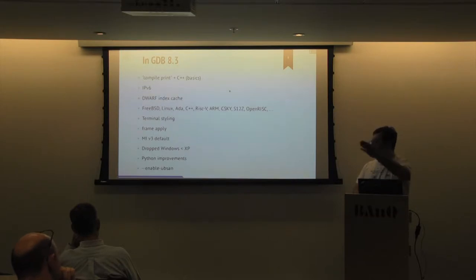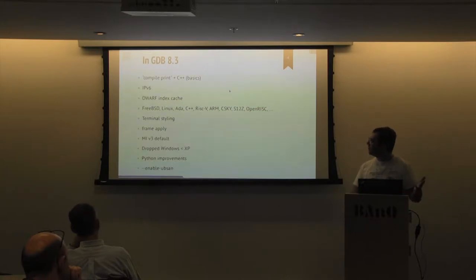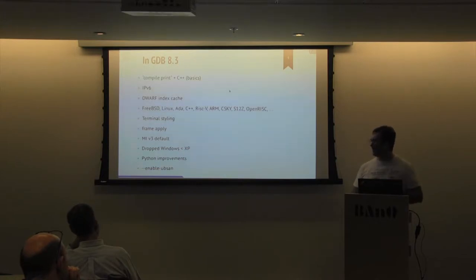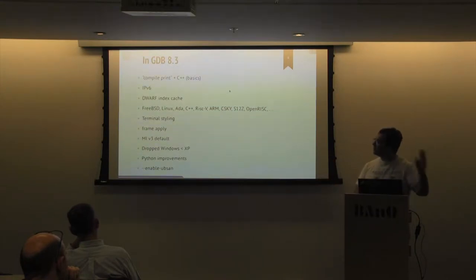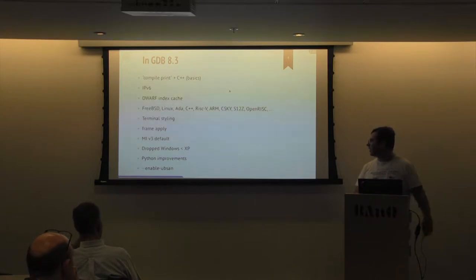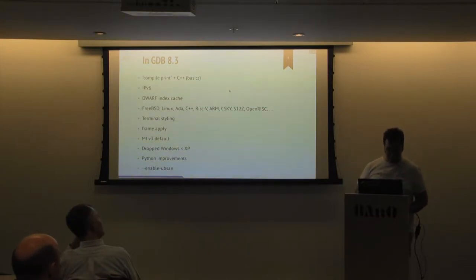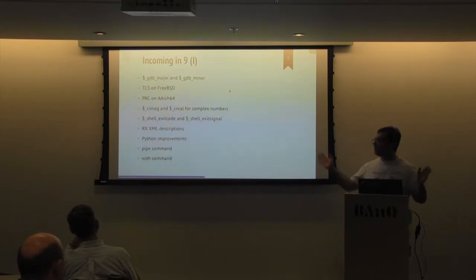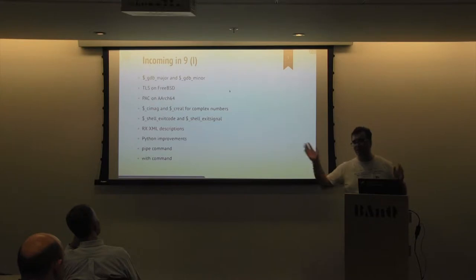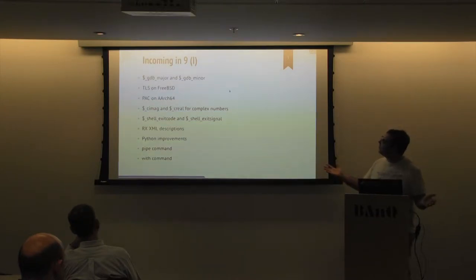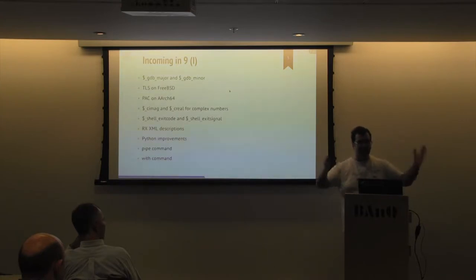We have an index cache now — thanks, Simon. A bunch of fixes to different architectures, ports, and languages. We now have terminal styling. Frame apply from Philippe. We now have MI using V3 by default, along with that some fixes to MI, finally breaking compatibility in version 3, fixing some old annoying bugs in MI. That's all in GDB version 9, things in master that haven't been released yet — things we've been doing the past few months.